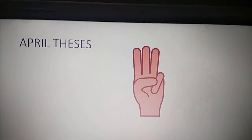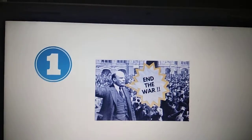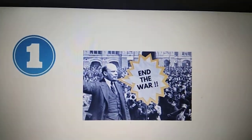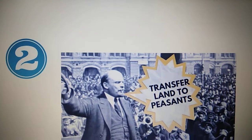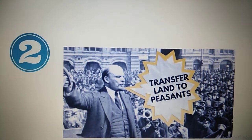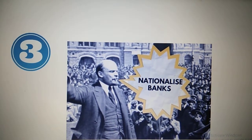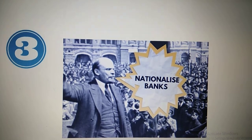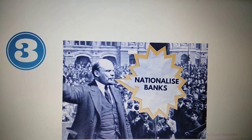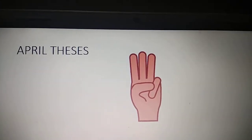Lenin put forward three demands, which were called the April Theses. The first demand was that the war — the First World War — should end, and Russia should not participate. The second was that the land owned by the nobility should be handed over to the peasants — the transfer of land to the farmers or peasants. The third was to nationalize the banks: banks that were private should come under the government.